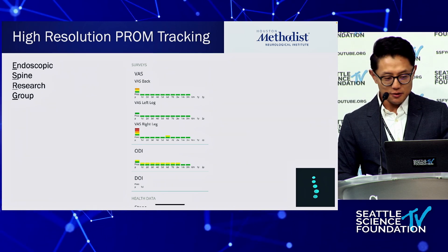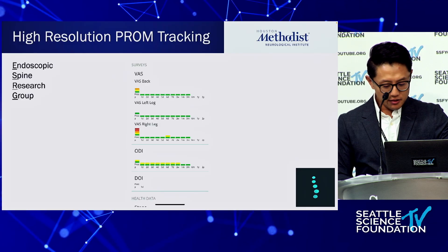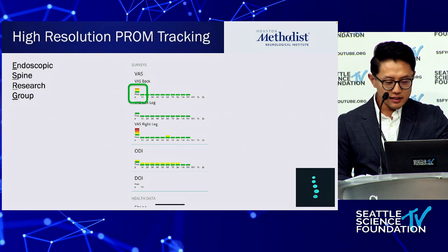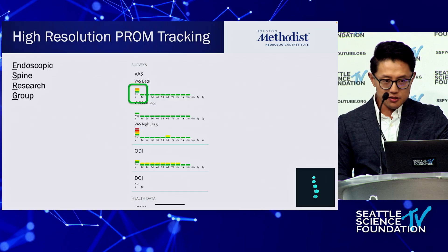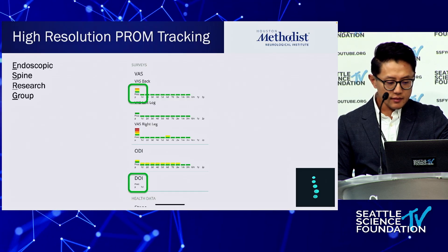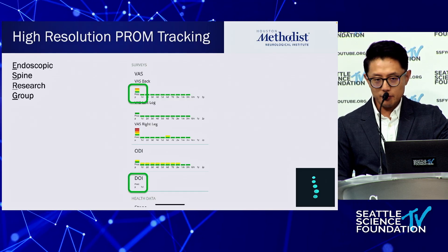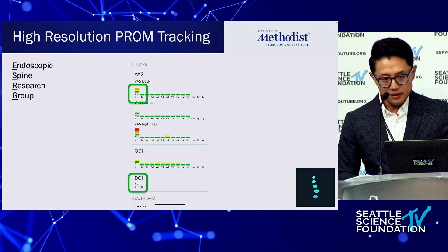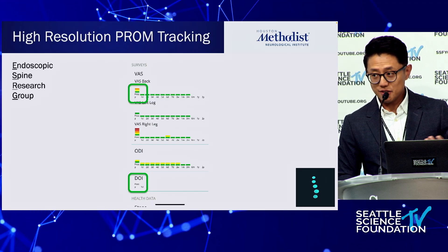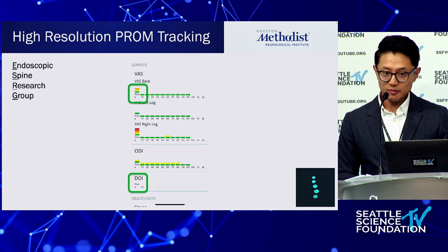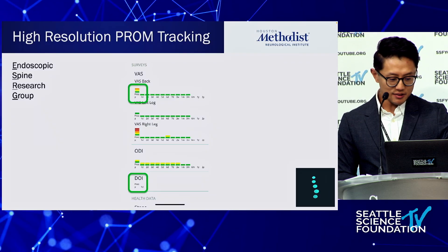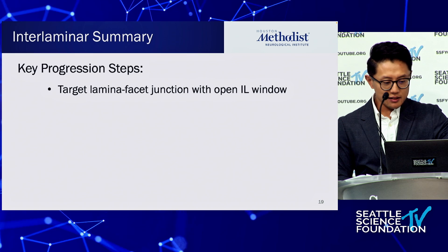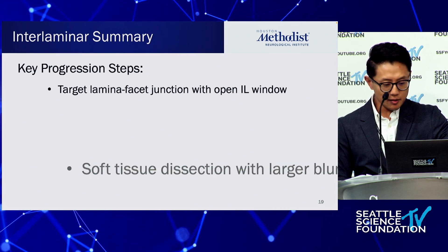When you look at these patients — and this is literally every single patient you do this for — you'll notice they never really get any surgical back pain. There's essentially no surgical back pain. And if you look at their opioid intake, these patients do not need opioids at all. There's still a subpopulation of tubular patients that have a lot of pain, and you can avoid that with this approach.